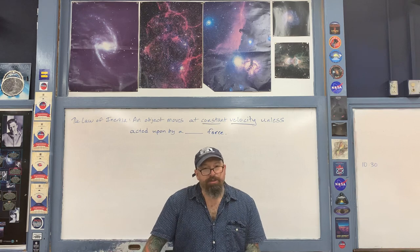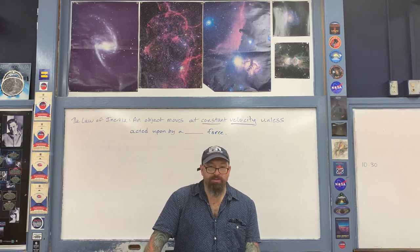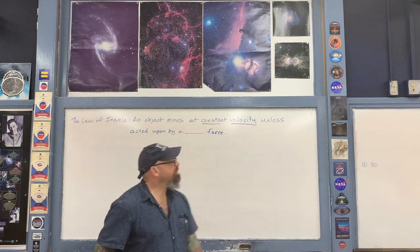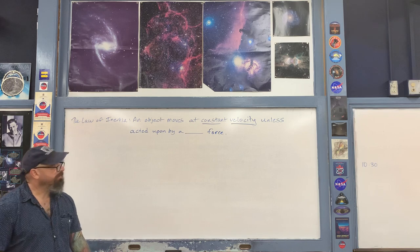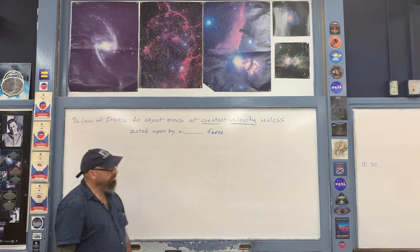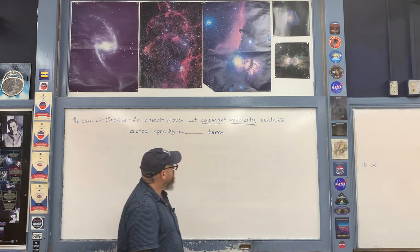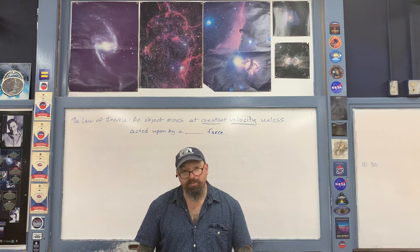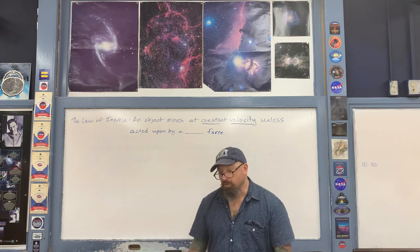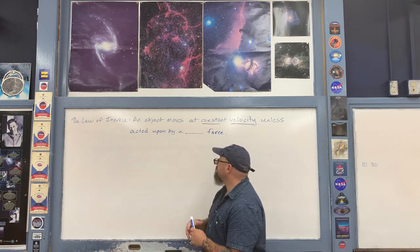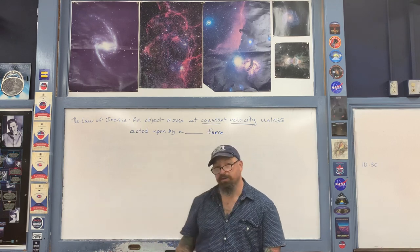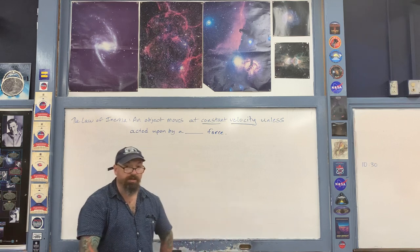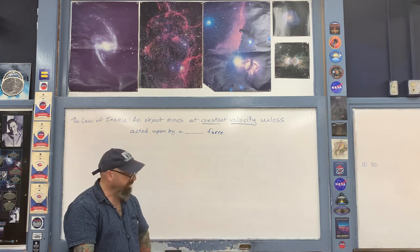This is the next part of the lecture covering Newton's first law, the law of inertia, which I still have written on the board here from the end of the previous part. An object moves at a constant velocity unless acted upon by a force. As I said earlier, we'll fill in this blank space in front of the word force eventually, but we'll get to that at a later portion of the lecture.